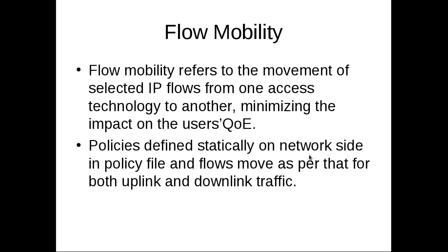Flow mobility means movement of selected IP flows from one access technology to another, or dividing the IP flow between connected interfaces. For example, if a mobile node has two interfaces and both are connected to the network, then with the flow mobility feature we can transfer FTP traffic from one interface and HTTP traffic from another interface. With the implementation of IP flow mobility, we have configured policies to divide the flow at LMA and at the mobile node.